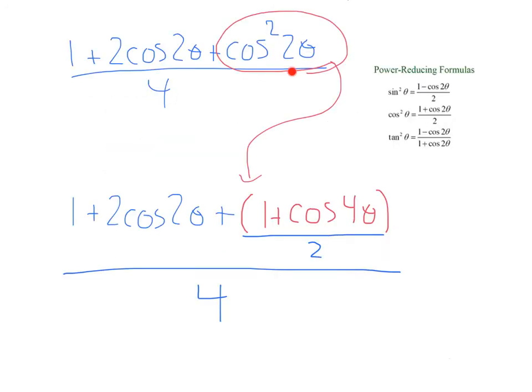Doing that, this cosine squared theta will turn into 1 plus cosine 4 theta over 2. Notice, our power reducing identity doubles this cosine theta right here to cosine 2 theta. Since we already have 2 theta, that's why it becomes 4 theta.